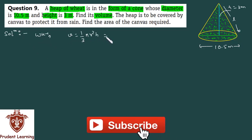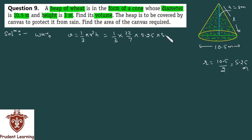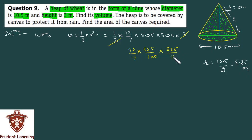We know that the volume of a cone is 1/3 × π × r² × h. Substituting values: 1/3 × (22/7) × r² × h. The diameter is 10.5, so the radius is 10.5/2 = 5.25 meters. Writing 5.25 × 5.25 for r², and height is 3 meters — the 3s cancel. We then have (22/7) × (525/100) × (525/100).